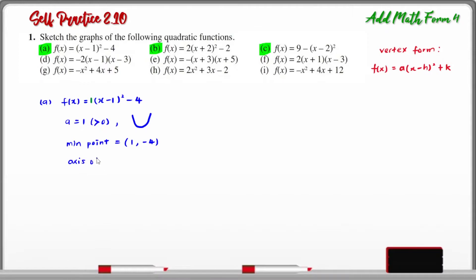Another piece of information we can get is the axis of symmetry. Since the axis of symmetry passes through the minimum point, the equation of the axis of symmetry is x = 1.